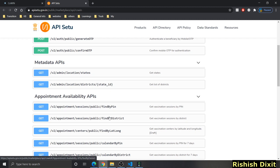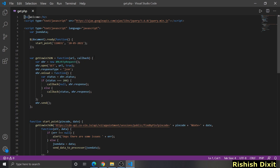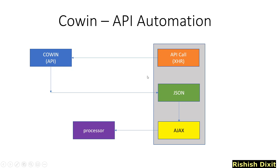Let's go back to VS Code and see how this can be implemented. Before going through all the code, let's first understand the strategy we will follow. I've already written this code, so let's understand the strategy first. We will make an XHR API call to the COVID API, which will give us JSON data. Once we get this JSON data, we will make an Ajax call to our processor, which can be written in PHP, JSP, or any other server-side script, to process the data and send an email.